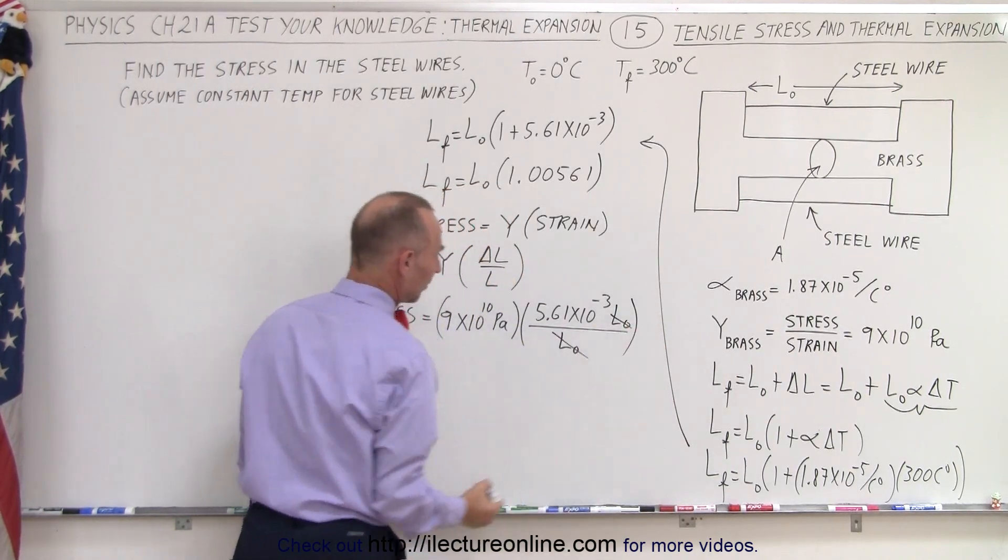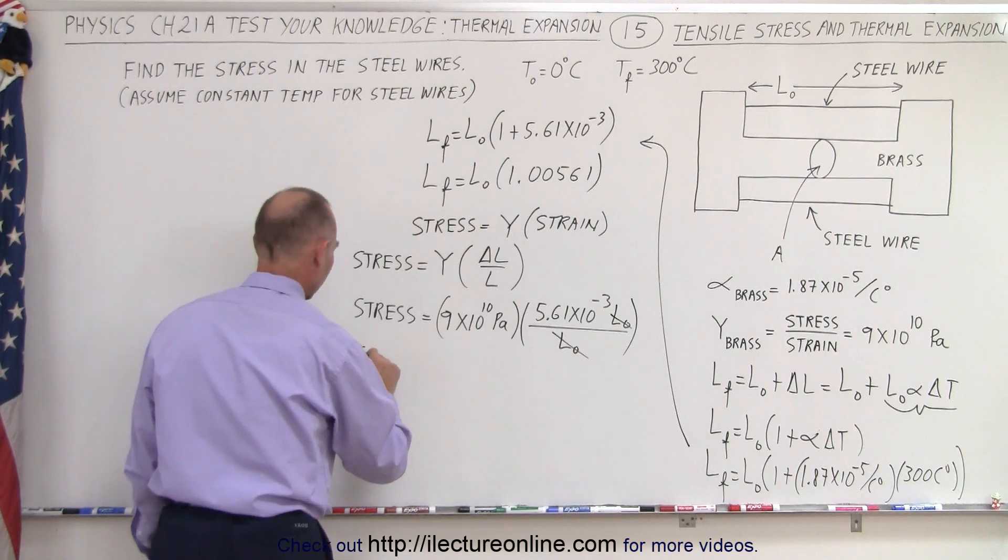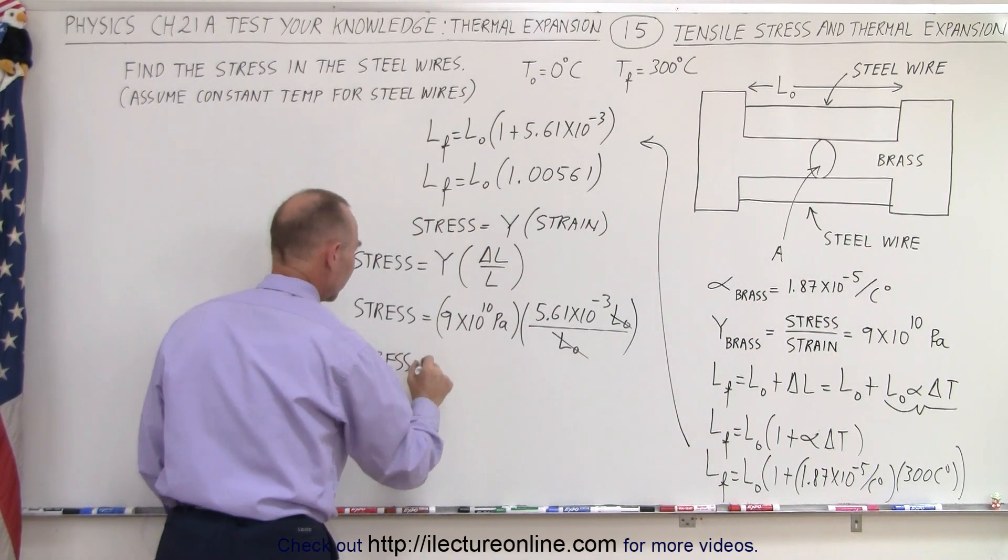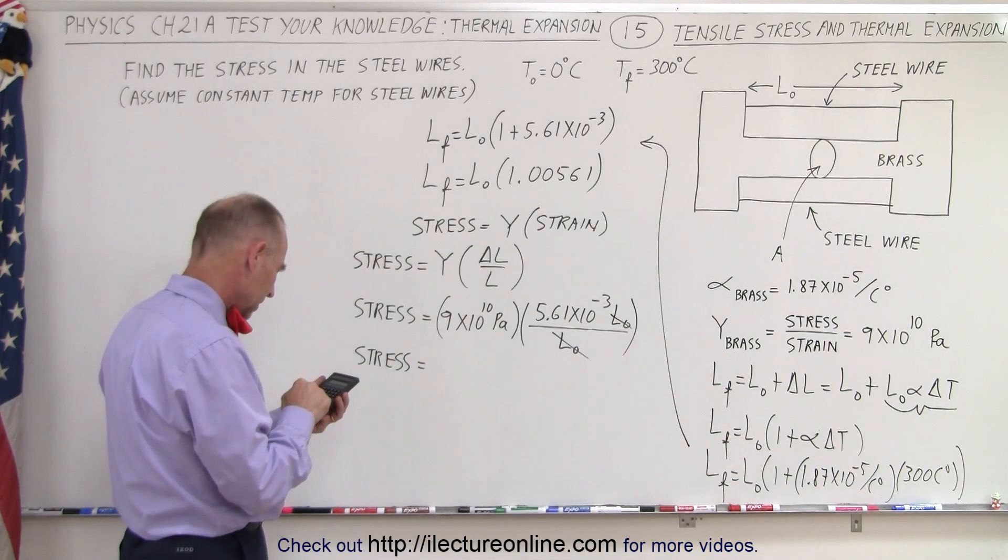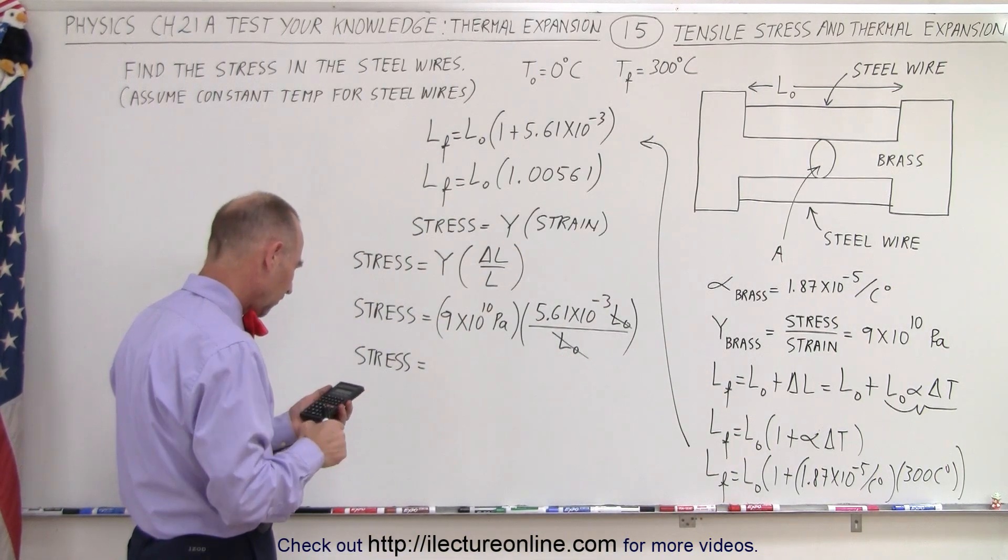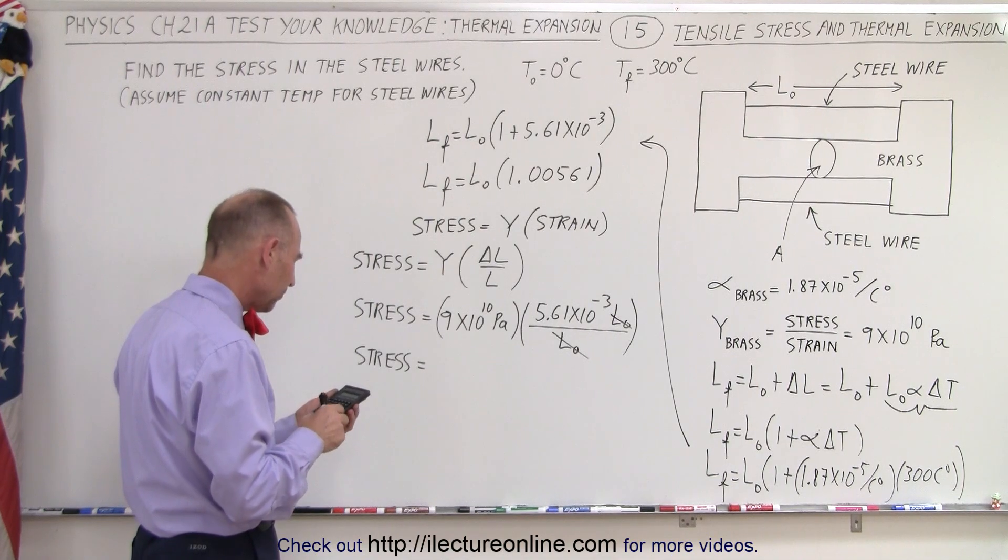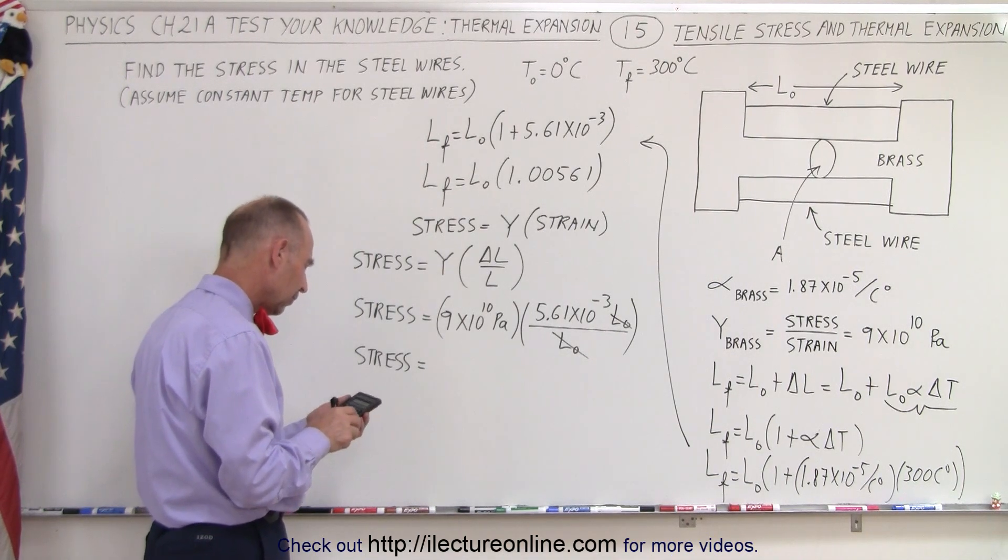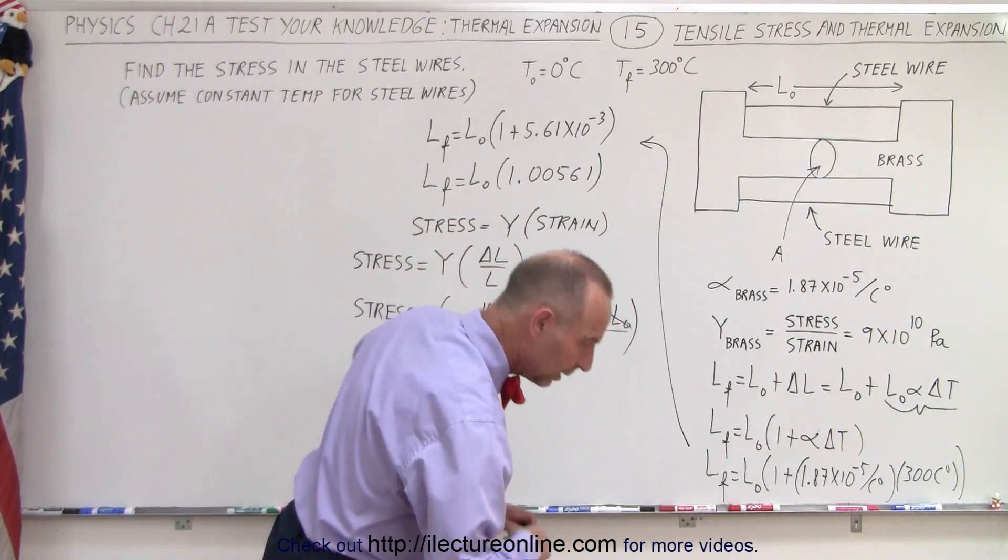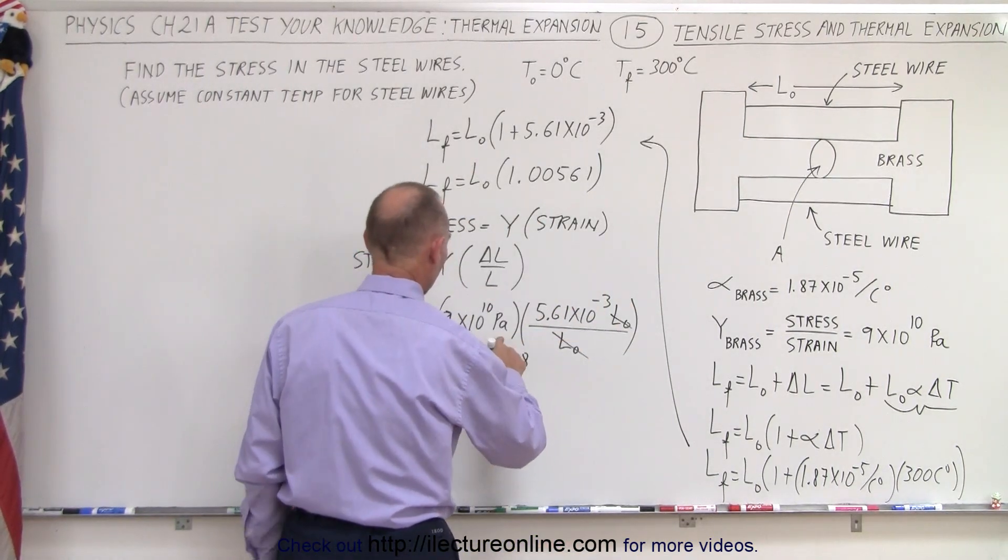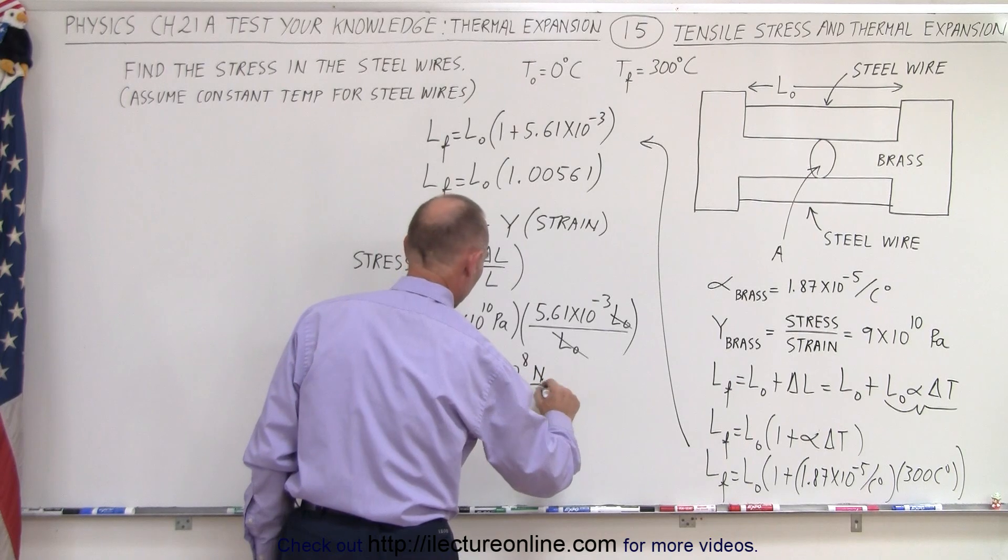And of course you can see that L initial cancels and we can then see that the stress is equal to 5.61 times 9e10 equals 504.9 or 5.05 times 10 to the 8th Pascals. That would be Newtons per square meter.